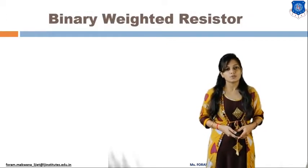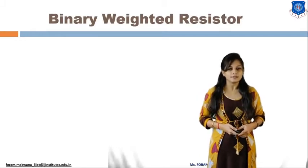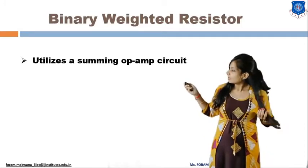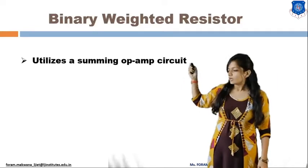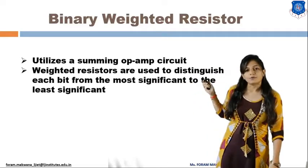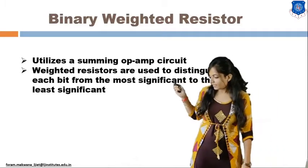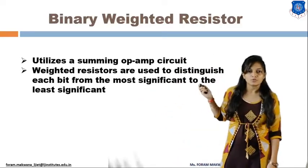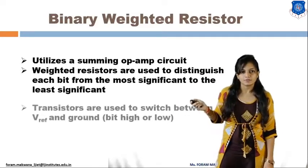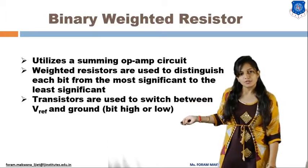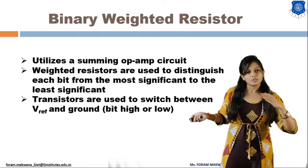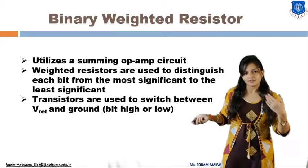In the binary weighted resistor DAC, we use an op-amp for summing the input signal with the help of weighted resistors. These weighted resistors are used to distinguish each bit from the most significant bit to the least significant bit. A transistor is used as a switch to identify whether a bit is high or low.